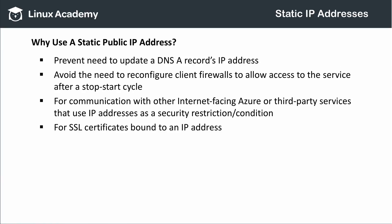When do you want to use a static public IP address? Anytime you have a DNS A record that points to an Azure service's IP address, you'll want to make that public IP address static to prevent the need to update that record. The same is true if you have client firewalls that are addressing Azure resources by IP address or that require IP addresses for rule configuration. Some applications test IP addresses even without a firewall — if you have such an application, you'll want to make static the public IP address of the Azure resource that the application is trying to reach.